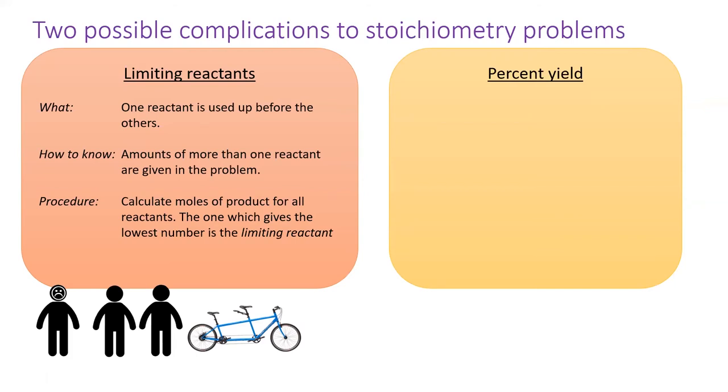You will need to solve the stoichiometry problem for each reactant, then determine which reactant creates the least amount of product. That reactant is limiting, and the other reactants are in excess.